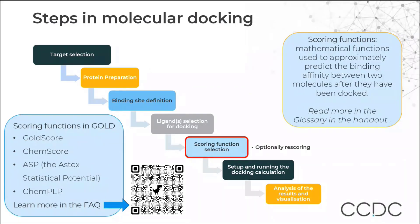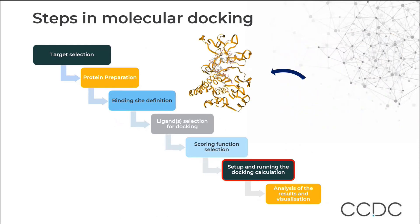We have four different scoring functions: GoldScore, ChemScore, Astex Statistical Potential (ASP) and ChemPLP. By default, ChemPLP is the scoring function of choice in GOLD. We will then perform the actual docking of the ligand molecule into the active site of the target protein receptor.